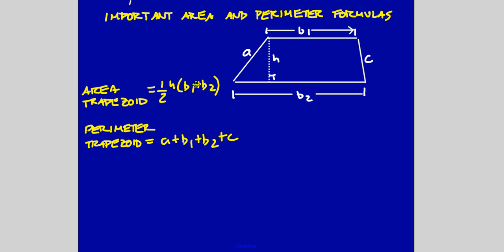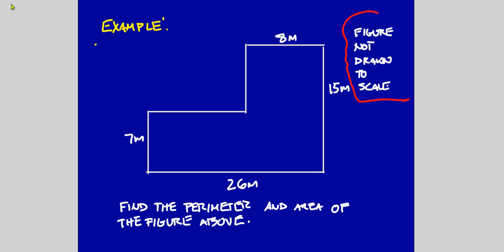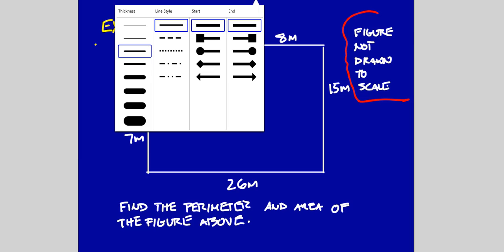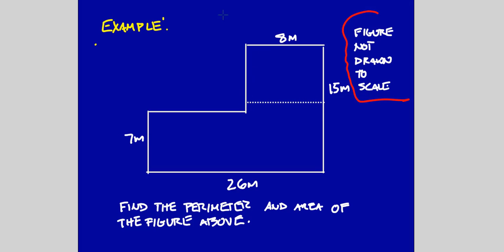Let's do some problems. Here I have an L-shaped figure. I can break it into two rectangles — that's how I'm going to approach this. I'm going to break it this way; I could have broken it going up and down as well. I'll call this rectangle one and this rectangle two. Find the perimeter and area of the figure.